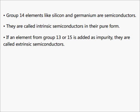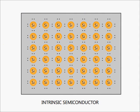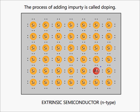If an element from group 13 or group 15 is added to intrinsic semiconductors in the form of impurity, then they are called extrinsic semiconductors. Extrinsic semiconductors are better electrical conductors than intrinsic semiconductors. While adding an impurity, we should keep in mind that the atomic size of that impurity should be comparable with that of the group 14 element such that it fits properly in the crystal. The process of adding impurity is called doping.